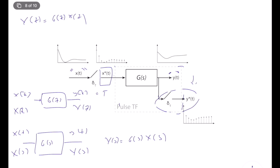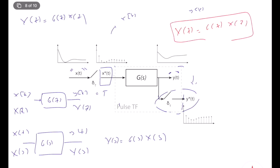So x star of t and y star of t are continuous time signals, but since they are in the star domain, we can convert them into x of k and y of k. The pulse transfer function is technically a discrete time transfer function: y of z is equal to g of z times x of z. So pulse transfer function is nothing but a discrete time transfer function between the sampled input and sampled output. The relation between x of t and y of z is not linear time invariant in general, but the relation between x star of t and y star of t is generally linear time invariant — or at least you should build your systems to achieve this.